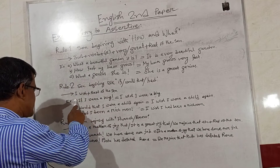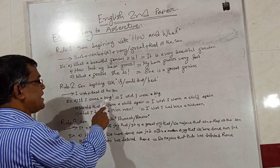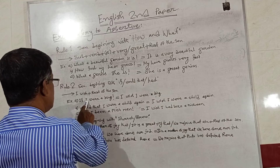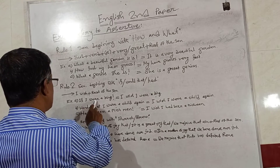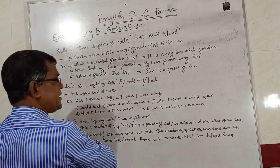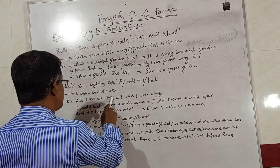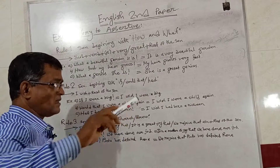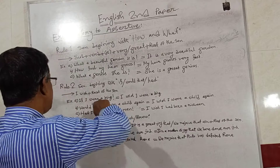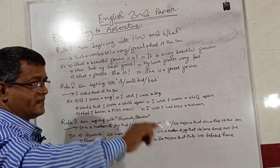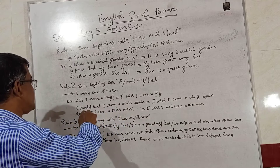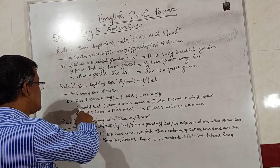For example: 'If I were a bird.' The sentence begins with 'If,' so we use 'I wish' in place of 'If.' We omit 'If,' then write the rest of the sentence. So the answer will be: 'I wish I were a bird.' Only 'If' is to be omitted.